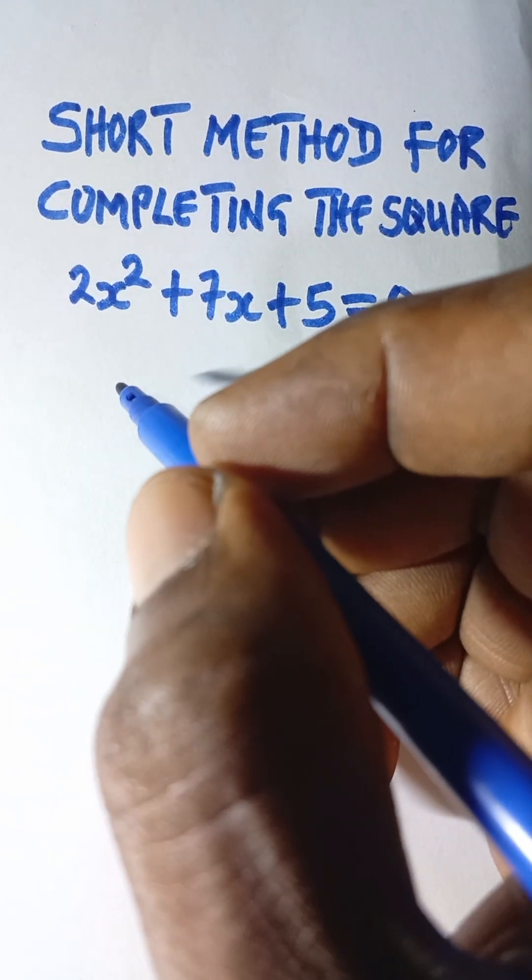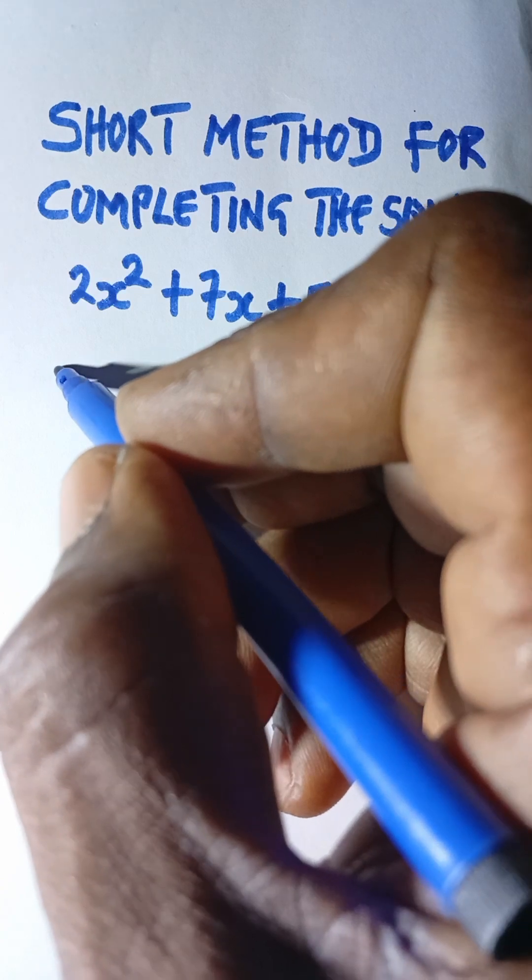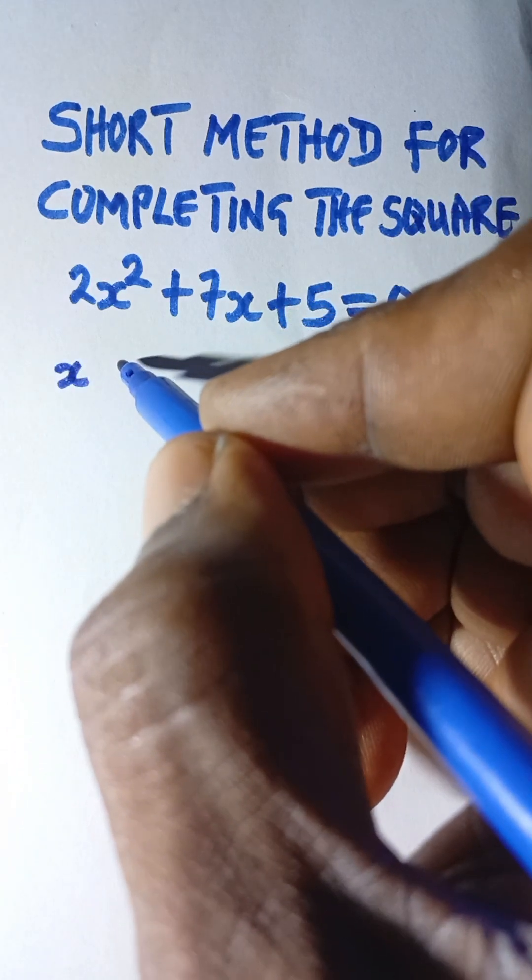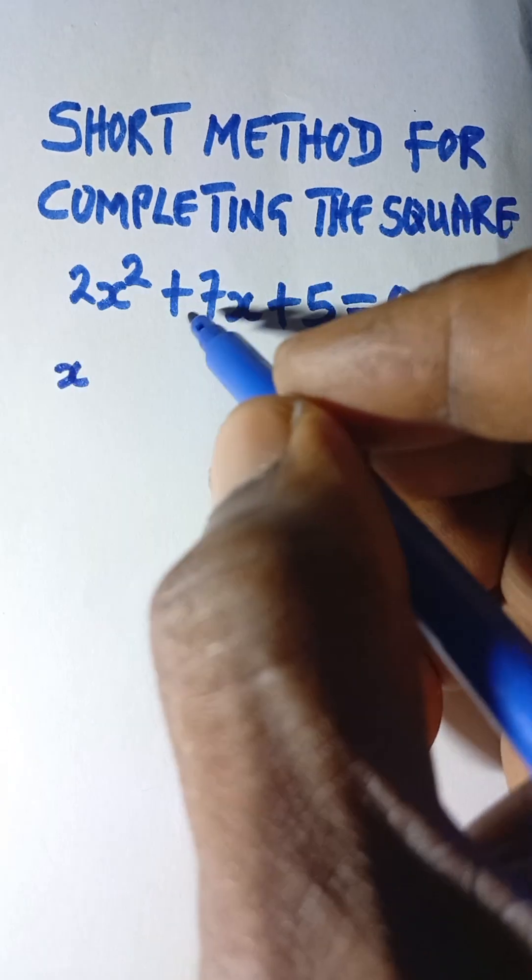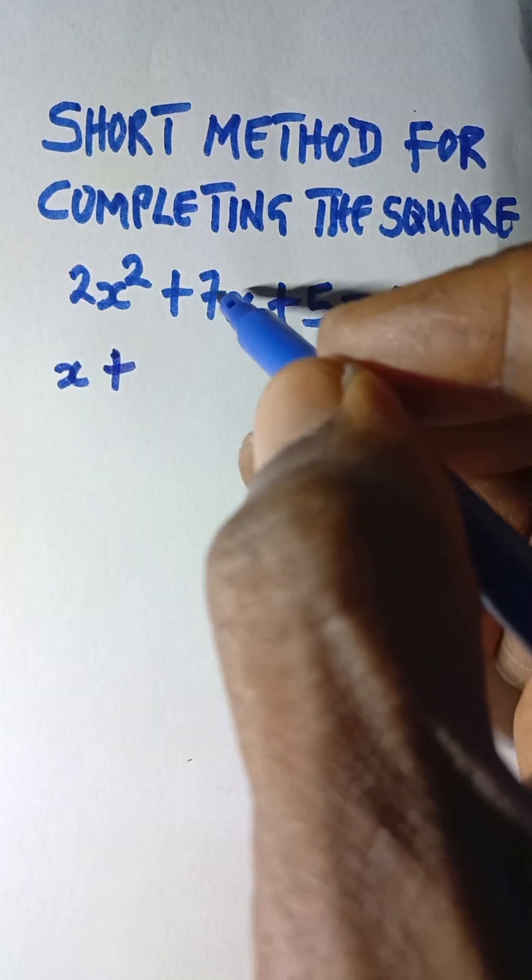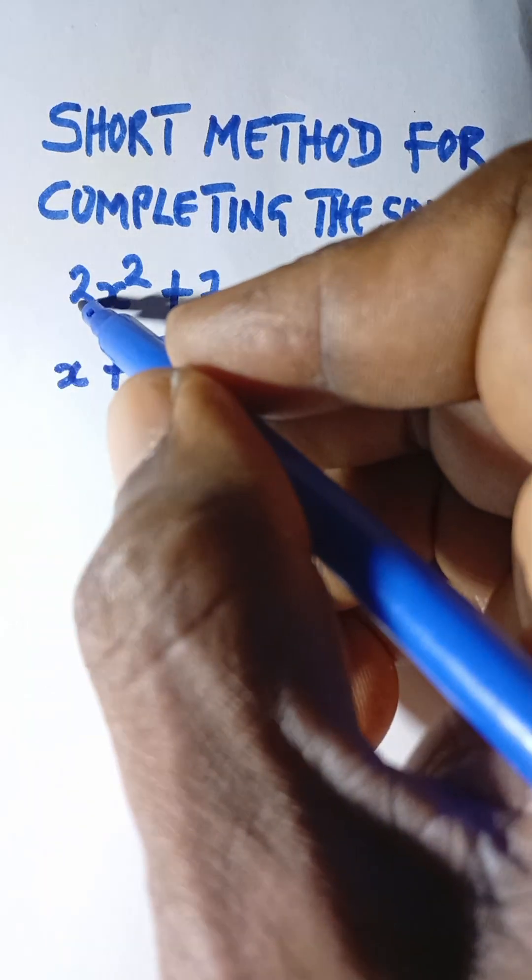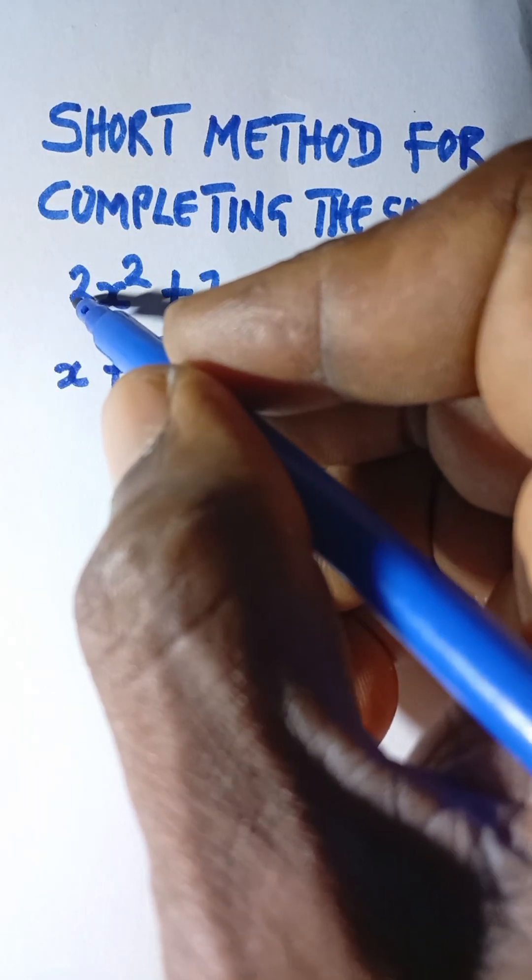Let us look at a short method here for completing the square. So to solve this, you simply write x, then you take whatever sign is here, that's plus. And then this number that is here, 7, all divided by whatever number here you multiply by 2. So 2 times 2 equals 4.